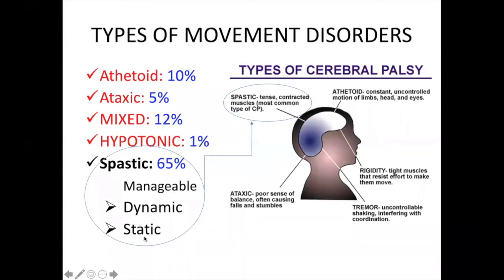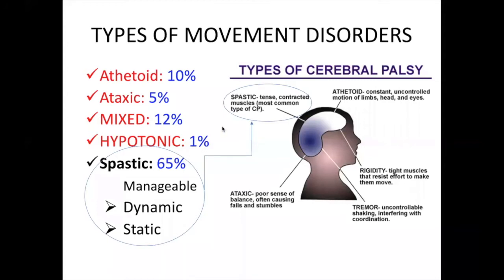Spastic deformities are usually dynamic or structural. When the top of the cerebellum is involved, there is contracture; athetoid movement is from the frontal lobe; basal ganglia involvement causes rigidity; and cerebellar involvement causes ataxia. All these are fewer in number. Spasticity is most common — 65% of patients — and gives a very good response to treatment.